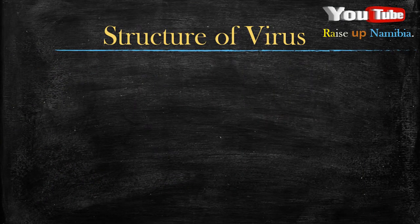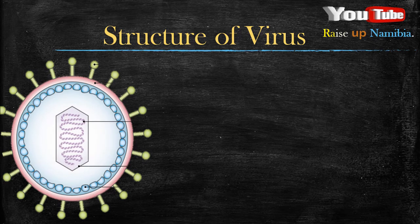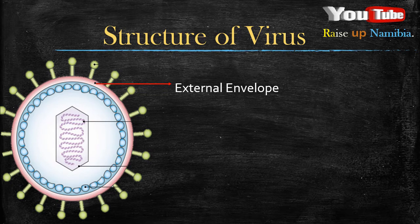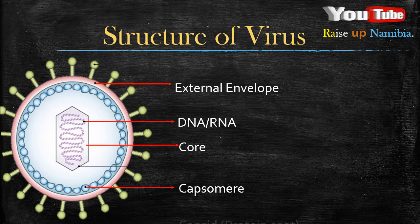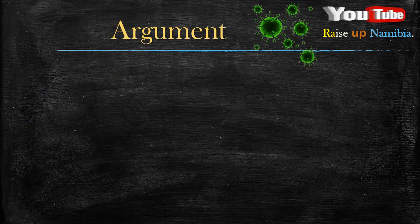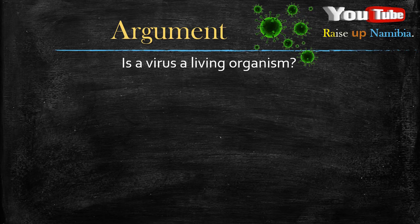The structure of a virus contains an external envelope, the genetic material which is DNA or RNA found inside the core, and it also consists of the capsomere which makes up the capsid, better known as the protein coat.